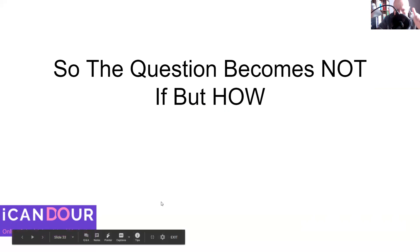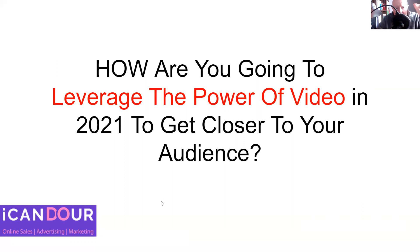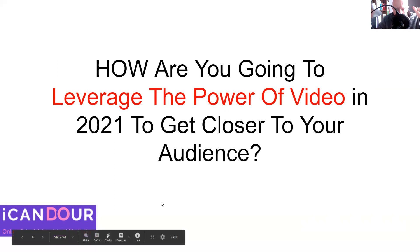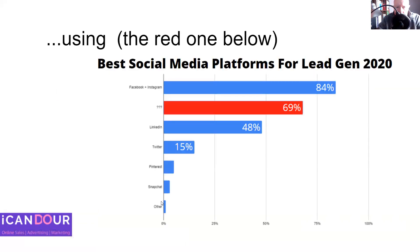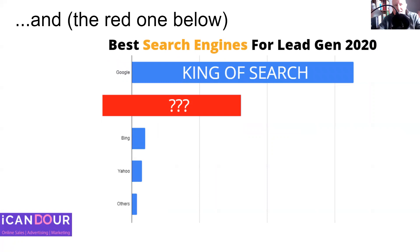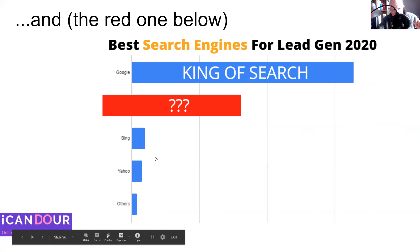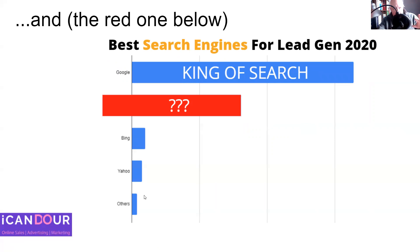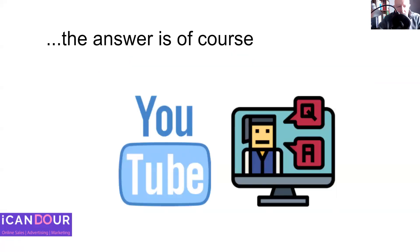So the question becomes not if, but how — how are you going to leverage the power of video in 2021 to get closer to your dream audience? I'm going to give you a clue. You're going to use the red one below. What we're showing here is the best social media platforms for lead generation in 2020. We're going to be using the red one most of all. What is the red one there at 69%? It's the same one here — a list of the best search engines for lead generation in 2020. In other words, it's the second largest search engine, and it's not Bing, it's not Yahoo, and it's not any of the others. And it's the second largest social media platform, larger than LinkedIn, larger than Twitter, but below Facebook plus Instagram together. The answer is, of course, YouTube.